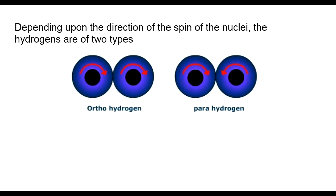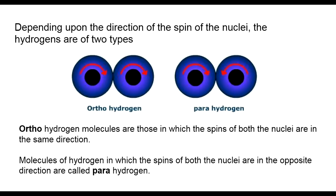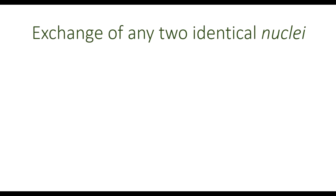Hydrogen having a covalent-bonded dihydrogen molecule has two types of isomers depending on the direction of spin of the nuclei. One is ortho hydrogen and another is para hydrogen. In ortho hydrogen, the spins of both nuclei are in the same direction, whereas in para hydrogen, the spins of both nuclei are in opposite directions.